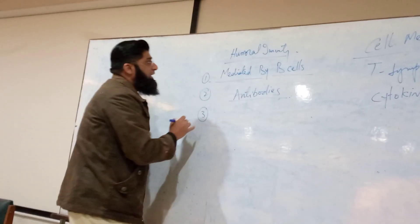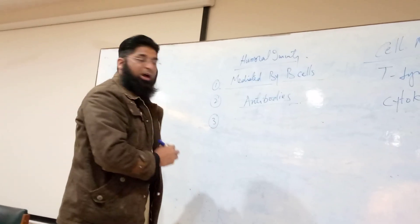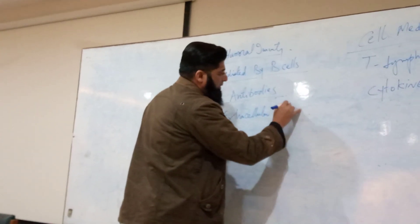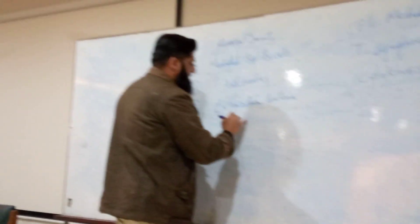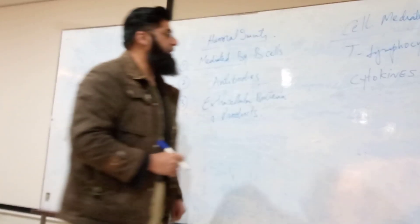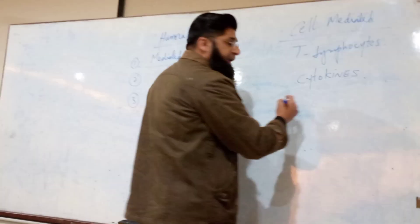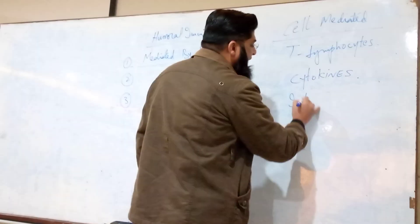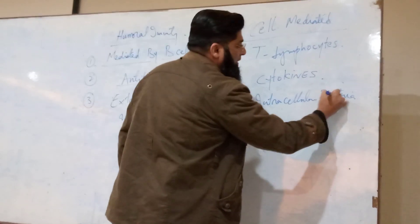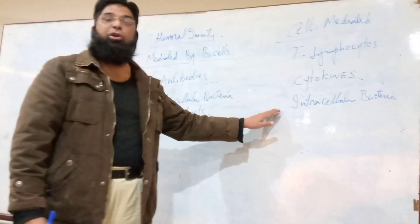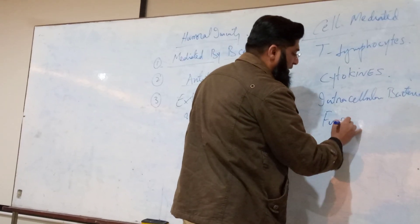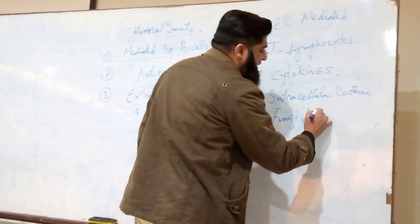Number three: humoral immunity is effective against extracellular bacteria and their products like staphylococci and streptococci. On the other hand, cell-mediated immunity is mainly effective against intracellular bacteria — for example, Mycobacterium tuberculosis — as well as against fungi, virus-infected cells, and viruses.